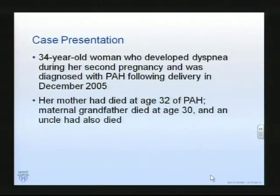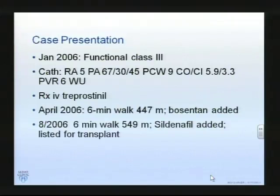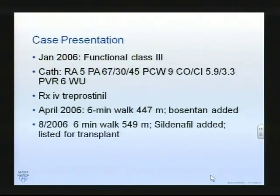Perhaps a case would serve to illustrate some additional points. This is a 34-year-old lady who presented following delivery from her second pregnancy and unfortunately, as is not uncommonly the case, had a family history of the same disease, suggesting she might well have an inherited disorder. Back in January of 2006 she was functional class 3, with a catheter showing moderate elevation of pulmonary artery pressures, normal wedge, and a very respectable cardiac index at 3.3. She was treated with IV treprostinil, which is of course an analog of prostacyclin epoprostenol, and did quite well initially.